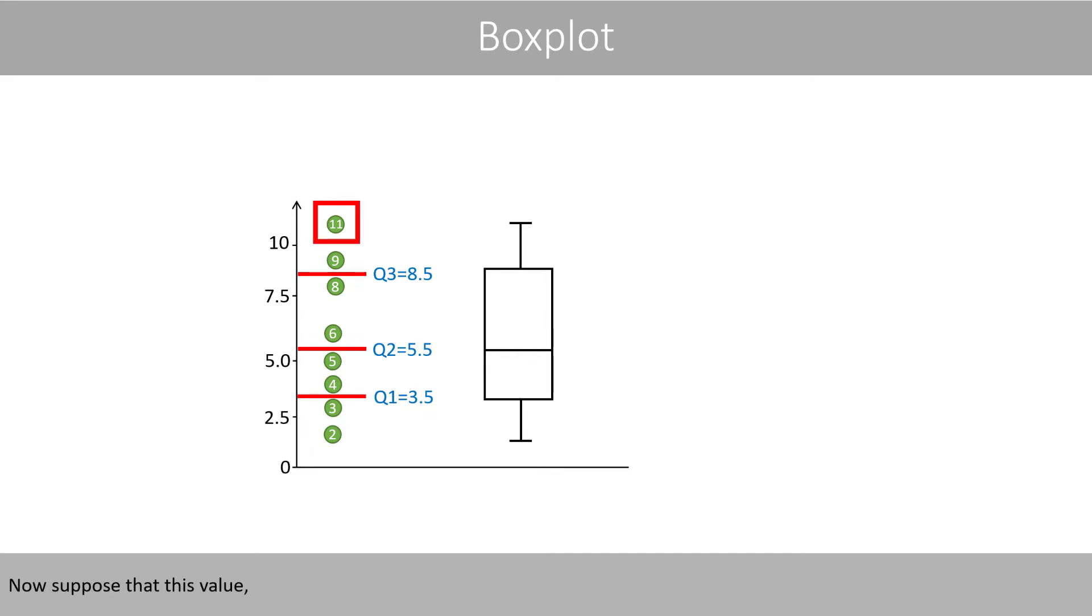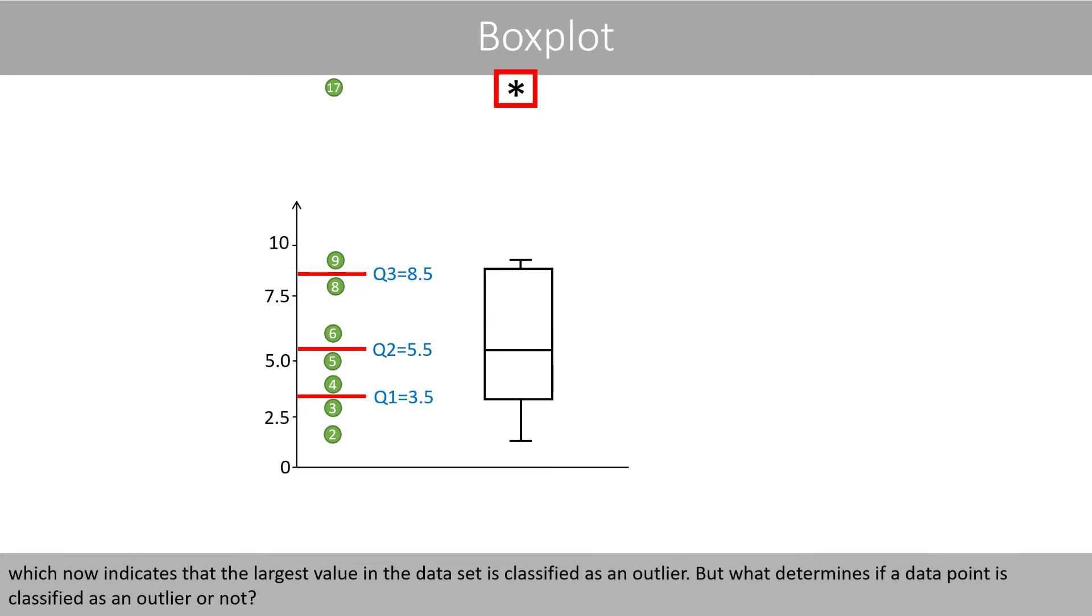Now, suppose that this value would increase to 17. That will change the appearance of the box plot to this, which now indicates that the largest value in the dataset is classified as an outlier. But what determines if a datapoint is classified as an outlier or not?